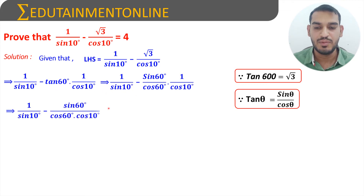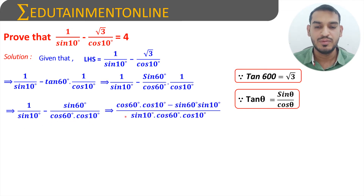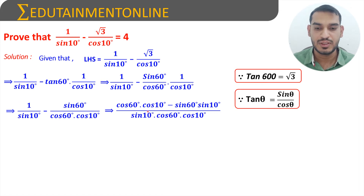That gives us 1 by sine 10 degrees minus sine 60 degrees by cos 60 degrees into cos 10 degrees. For these two terms we will take the LCM. Since the denominators are different, the LCM is the product of all the terms: sine 10 degrees into cos 60 degrees into cos 10 degrees, minus sine 60 degrees into sine 10 degrees.